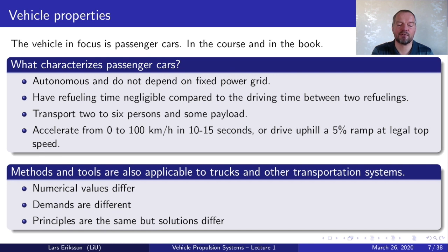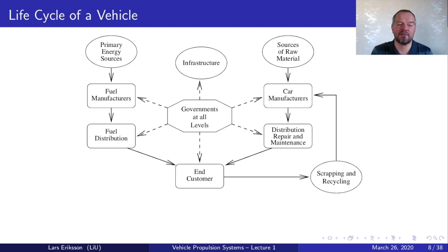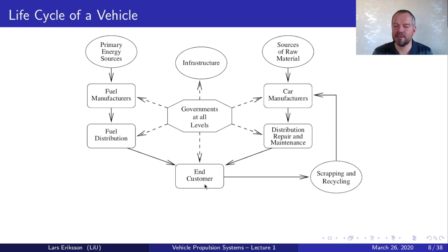Looking at where this course fits into society, we look at a big graph entailing the life cycle of a vehicle — from sources of raw material, manufacturing, distribution, repair and maintenance, to the end customer using it, and finally scrapping and recycling. The other part of impact is the consumption of energy sources: primary energy sources, fuel manufacturers, fuel distribution. And as a central point, we have governments restricting the use of harmful components and putting legislation on fuel properties, manufacturing, and recycling.